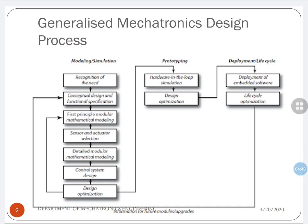The design is then optimized in the design optimization step, completing the modeling and simulation phase. Then comes prototyping. After the modeling and simulation step, prototyping includes adding hardware components into the simulation — components which are very difficult to model are used as the actual component itself. This is called hardware-in-loop simulation, which can also be understood as a method to tune the controller.